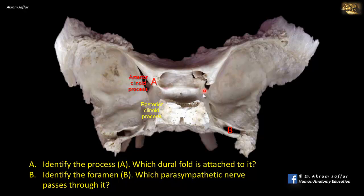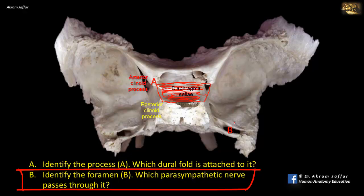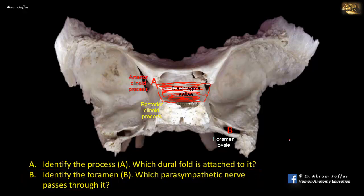To these clinoid processes, whether anterior or posterior, is attached a piece of dura mater that looks like a diaphragm — it's like a diaphragm of the sella turcica, hence it's called the diaphragma sellae, and it is perforated by the stalk of the pituitary gland. Foramen B is a foramen within the sphenoid bone. It's oval in shape, hence the name foramen ovale, and this foramen transmits the mandibular nerve and the lesser petrosal nerve on their way to the infratemporal fossa.